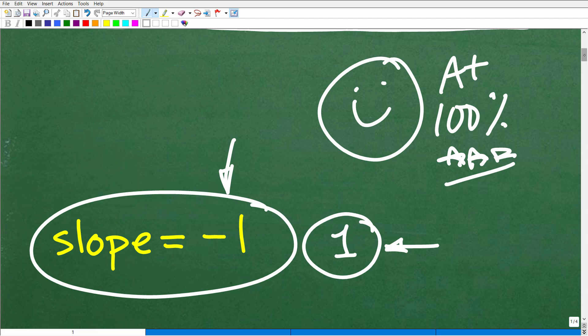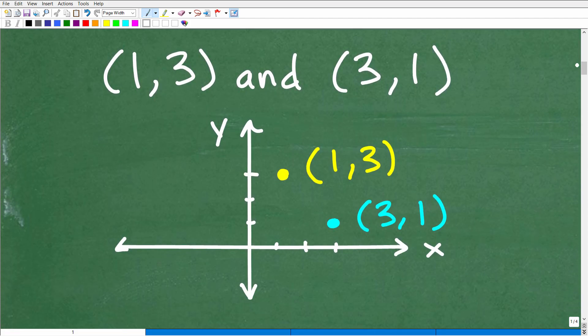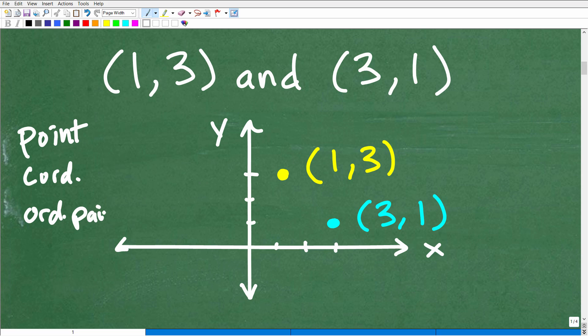Let's graphically see what's going on here. I have the point (1,3) and (3,1), and I'm going to plot these on the x-y plane. I'm using the term point, but in algebra and mathematics, point is the same thing as what we call a coordinate, and it's the same thing as an ordered pair.